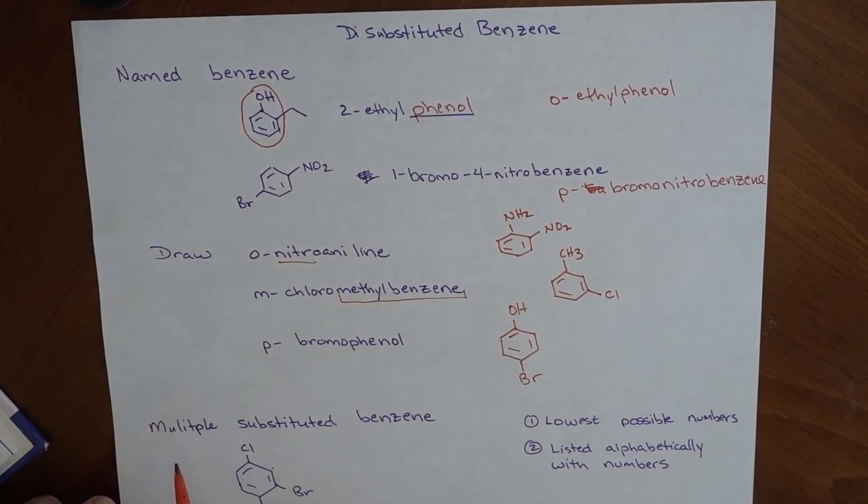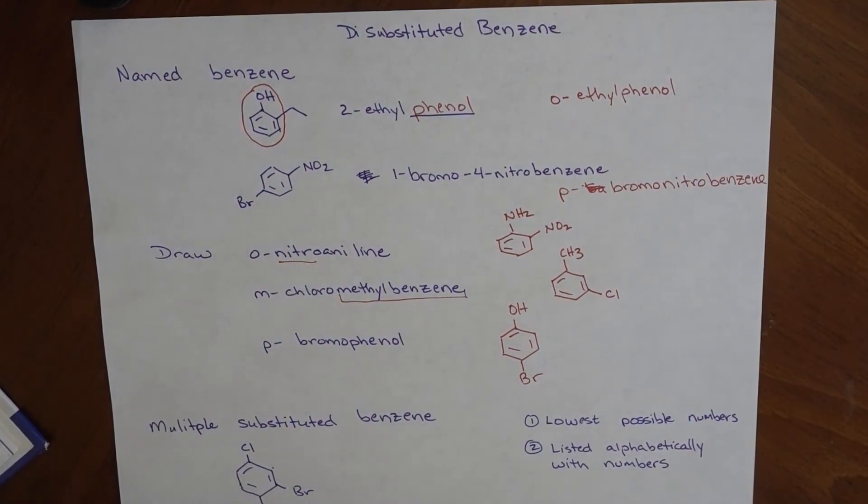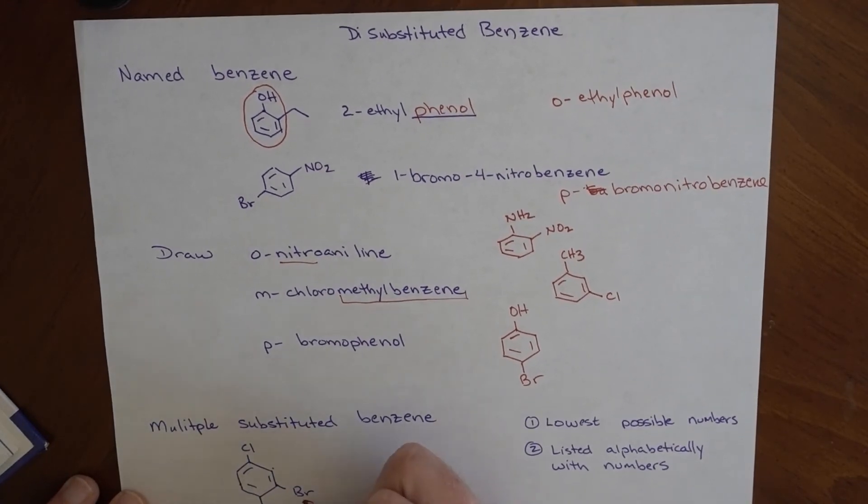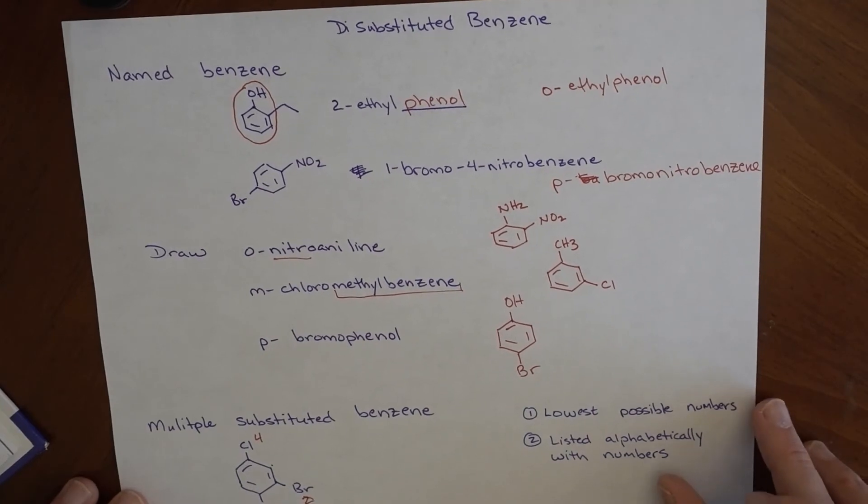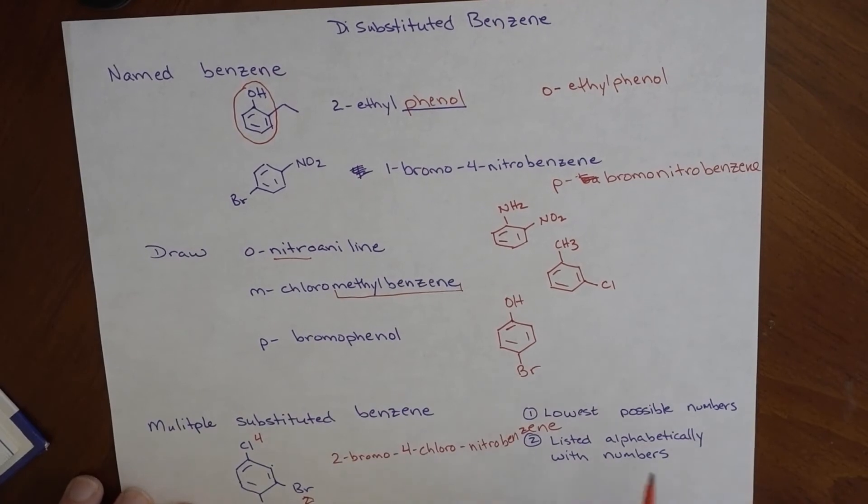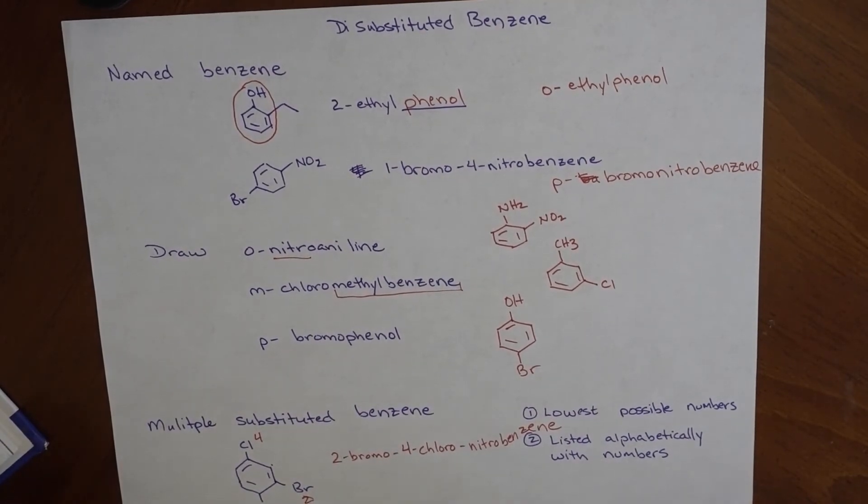If things are multi-substituted, we're not necessarily able to use ortho-meta-para because you don't necessarily know what those are there for. We go with the way to number this so that everything gets the lowest possible number. If we number this chlorine as 1, this becomes 3, this becomes 4. If we go with the nitro as 1, then this becomes 2, this becomes 4. 1, 2, and 4 is better than 1, 3, and 4. We list alphabetically with the numbers. The lowest number that we have here is 2. So it's 2-bromo-4-chloro-nitrobenzene. That's how it tends to work with multi-substituted benzenes.